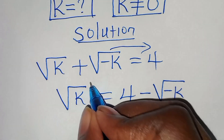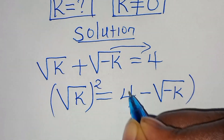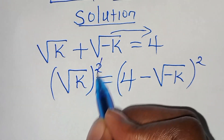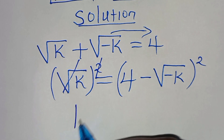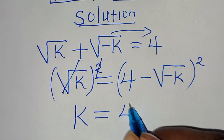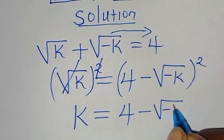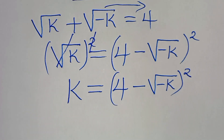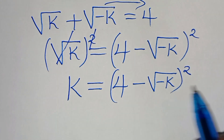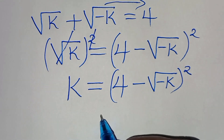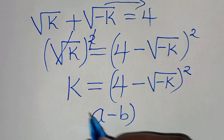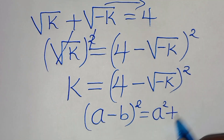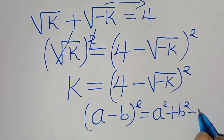The next step is to square both sides, so that the square root of k raised to the power of 2 gives us k, equal to 4 minus the square root of minus k, raised to the power of 2. This expression is in the form of (a minus b) squared.